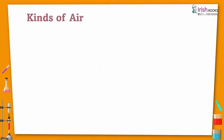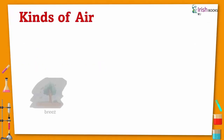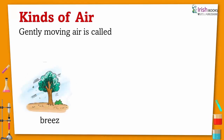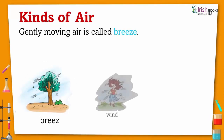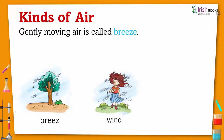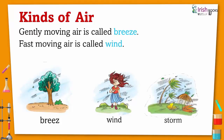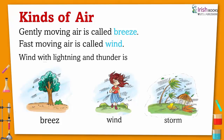Kinds of air: Gently moving air is called a breeze. Fast moving air is called wind. Wind with lightning and thunder is called a storm.